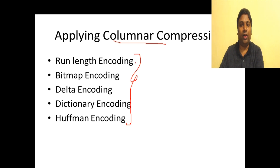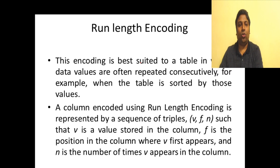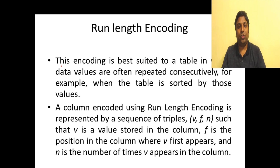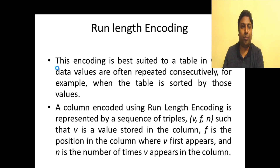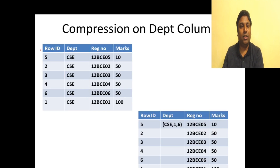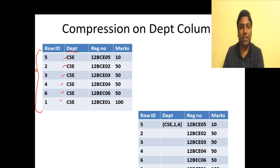The first technique is run-length encoding. Run-length encoding is suitable for a column wherein the data values repeat consecutively, and you can also have the entire table sorted by the values in that column. Consider this example: in the department column, 'CSE' is repeated consecutively, and we can compress it using the layout shown in this table.